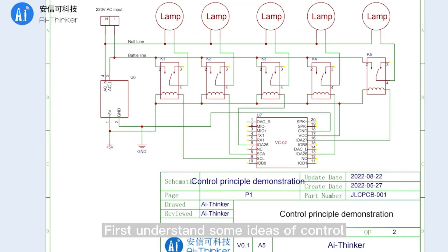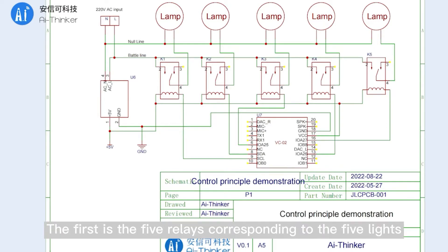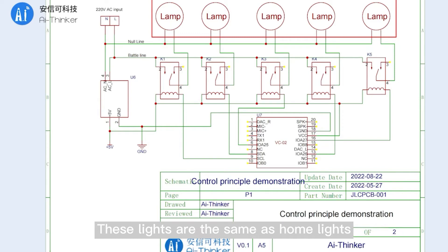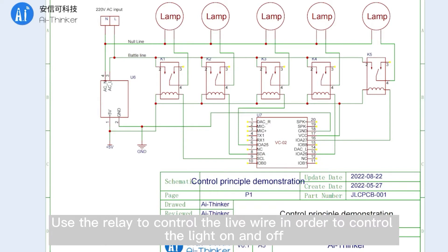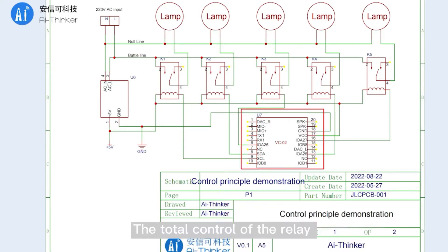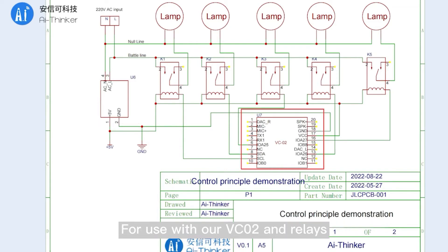First, let's understand some ideas of control. Five relays correspond to the five lights. These lights, the same as home lights, are powered by 220 volts. We use the relay to control the live wire in order to control the lights on and off. The total control of the relay will be completed by our VC-02. In the end, we will use an AC to DC circuit for use with our VC-02 and relays.